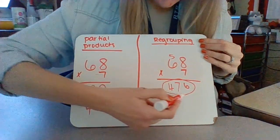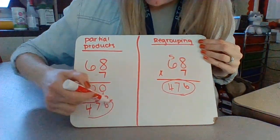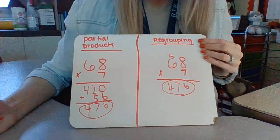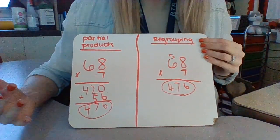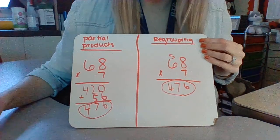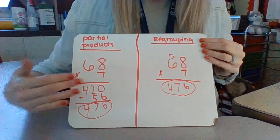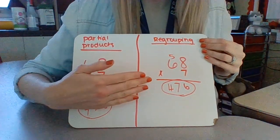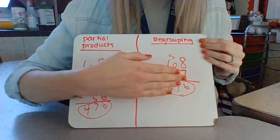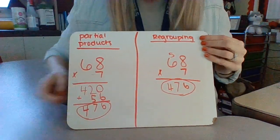So we have 476 here, we have 476 there. We got the same answer; it's just a different method. I'm going to do another problem both ways so you can see how we get the same answer and for another explanation on how to do regrouping.